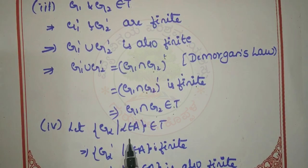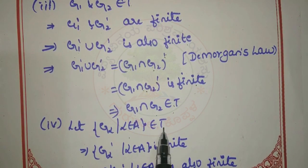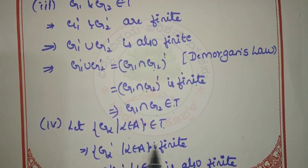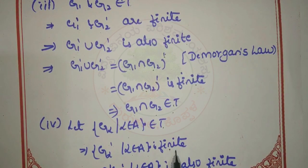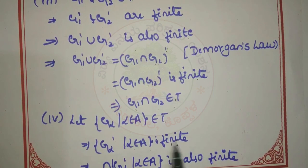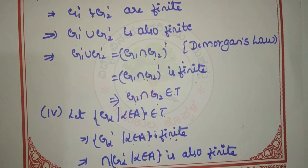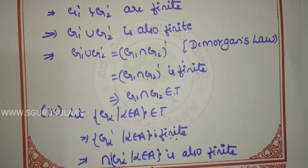Fourth condition: let G-alpha, such that alpha belongs to A, belong to T — this is an arbitrary collection. Obviously, the complement G-alpha' is finite for each alpha. The intersection of all G-alpha' is obviously finite, since the intersection is a collection of common elements. Therefore the intersection of this collection is finite.